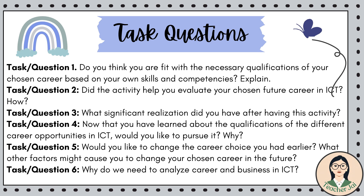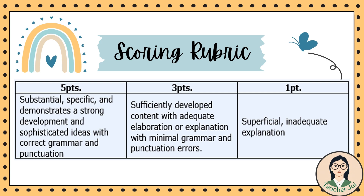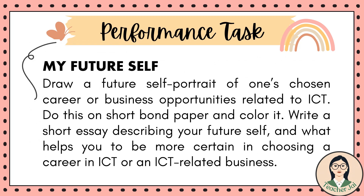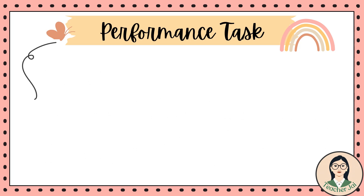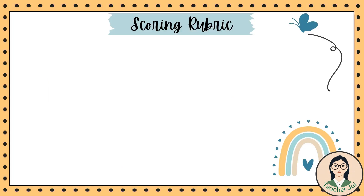Task question five: Would you like to change the career choice you had earlier? What other factors might cause you to change your chosen career in the future? Task question six: Why do we need to analyze career and business in ICT? You will be graded with this given rubric. For your performance task entitled 'My Future Self': draw a future self portrait of one's chosen career or business opportunities related to ICT. Do this on short bond paper and color it. Write a short essay describing your future self and what helps you to be more certain in choosing a career in ICT or an ICT-related business. Here's the example template for your performance task. You will be graded with this given rubric.